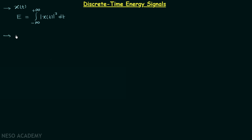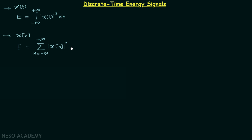For a discrete time signal x(n), the total energy represented by uppercase E is equal to a summation — in place of integration we use summation, because discrete time signals have samples which we add. We perform the summation from n equal to minus infinity to n equal to plus infinity of mod x(n) whole square. In this way we can calculate the total energy of a discrete time signal x(n).